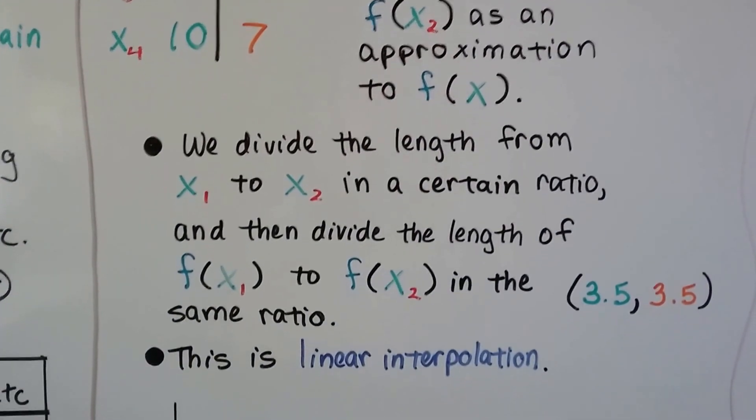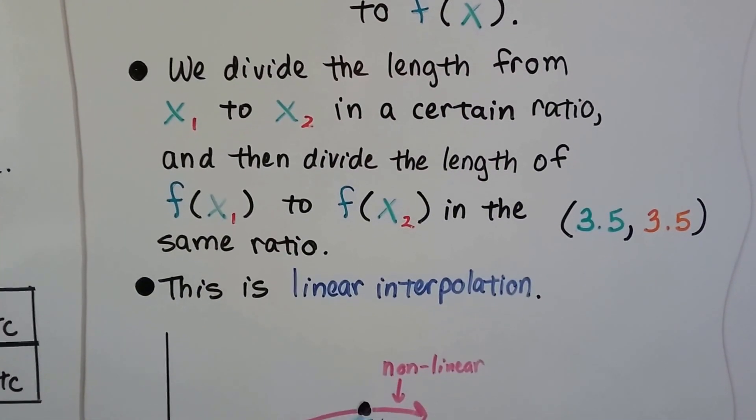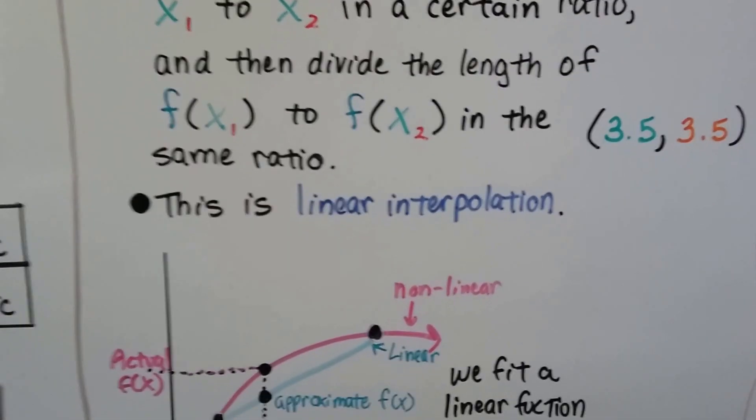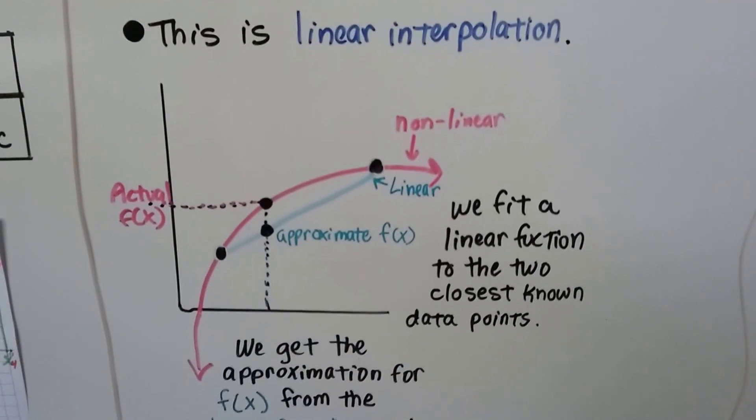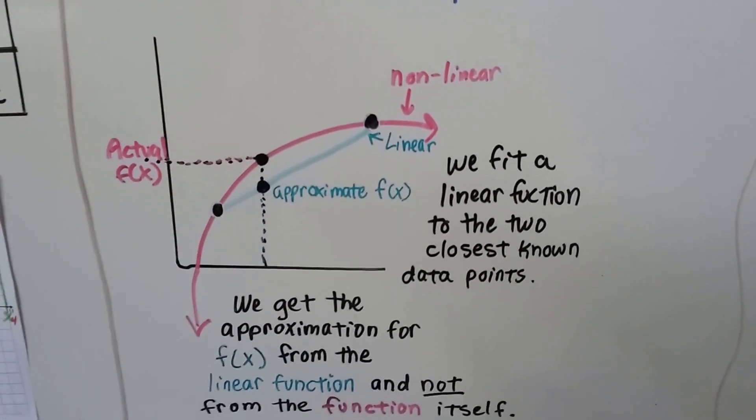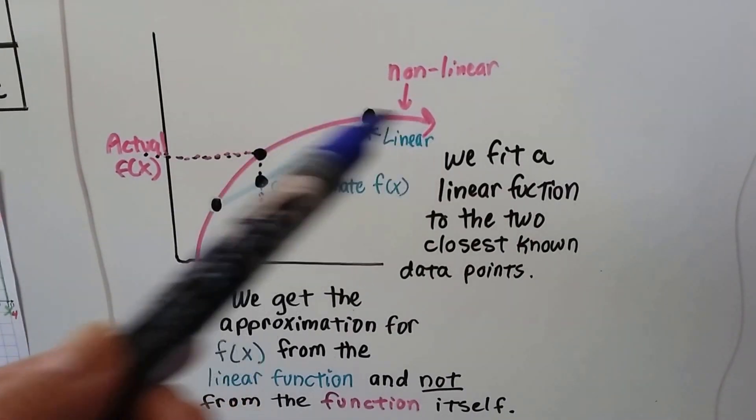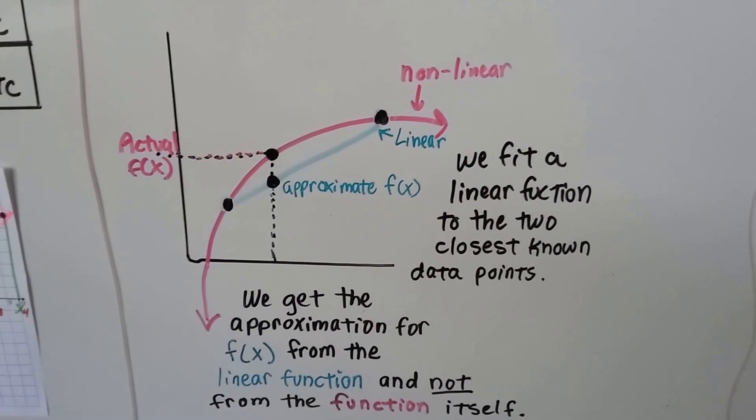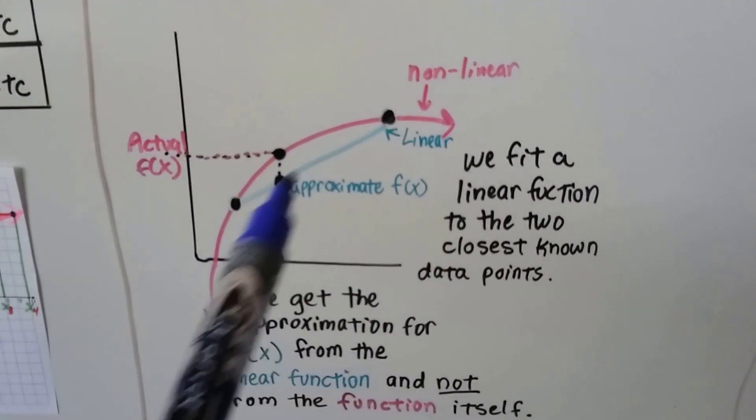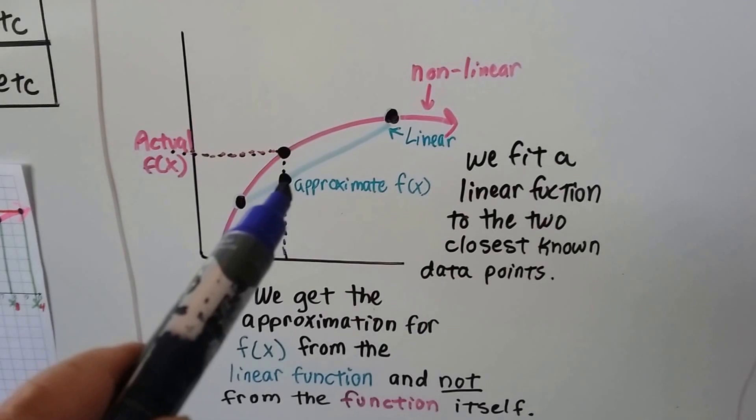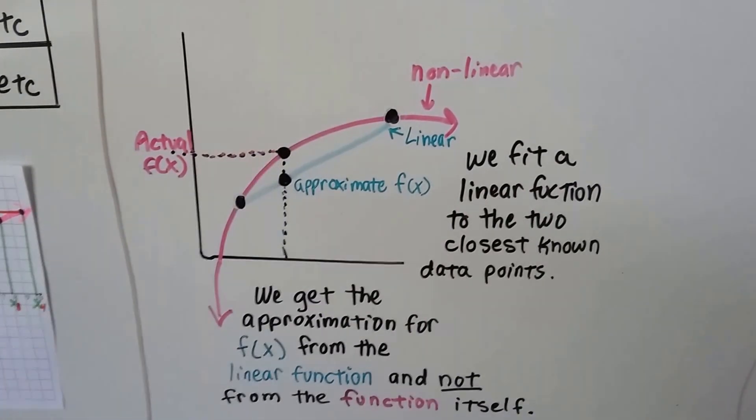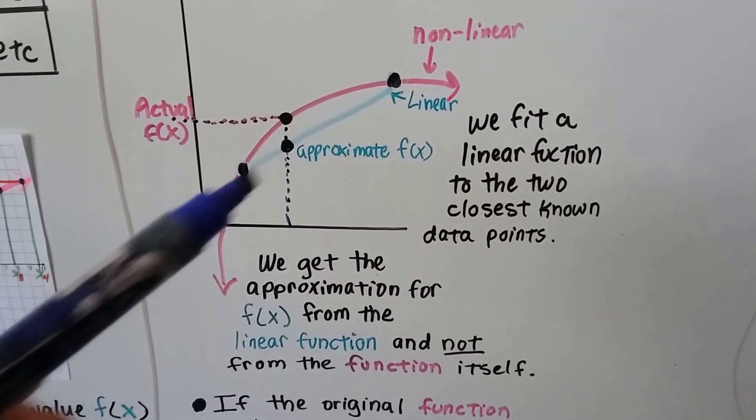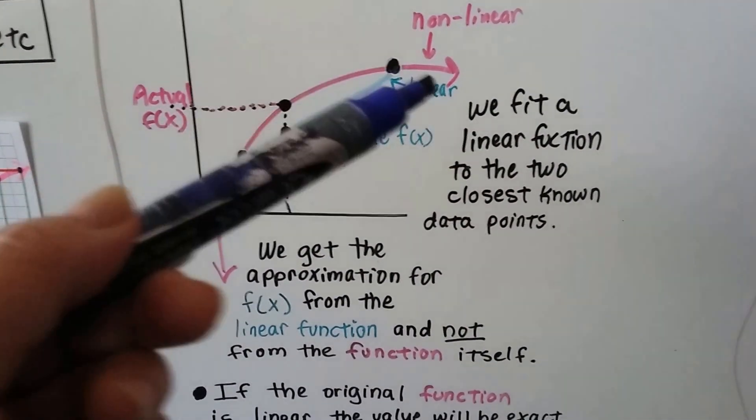We divide the length from x sub 1 to x sub 2 in a certain ratio, and then we divide the length of f(x₁) to f(x₂) in the same ratio. That's linear interpolation. If we have this curved nonlinear line, we can fit a linear function to the closest points, closest known data points. We make a straight line and that would be our approximation versus the actual. We get the approximation for f(x) from that linear function, not from the function itself.